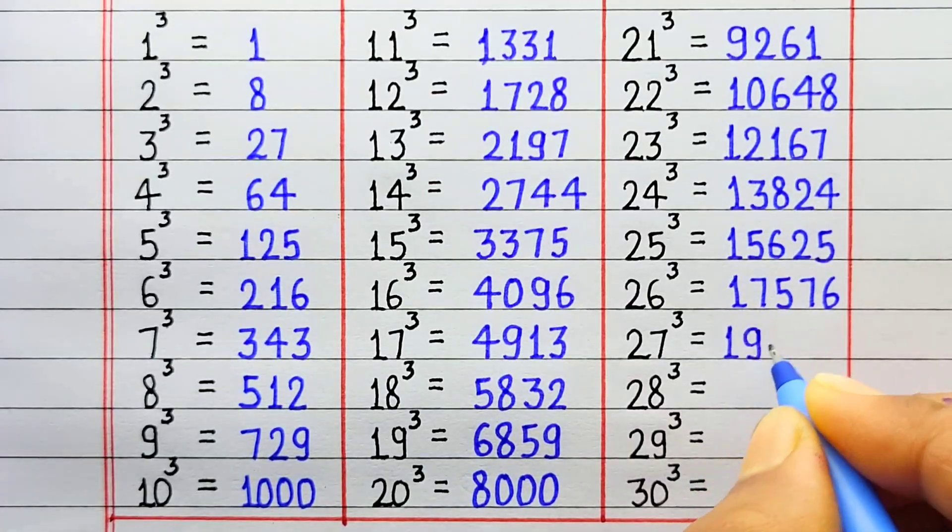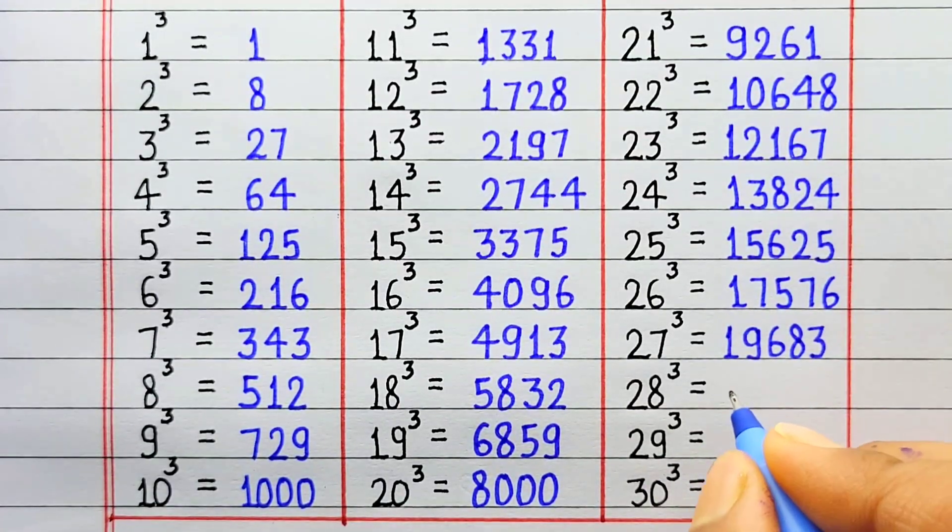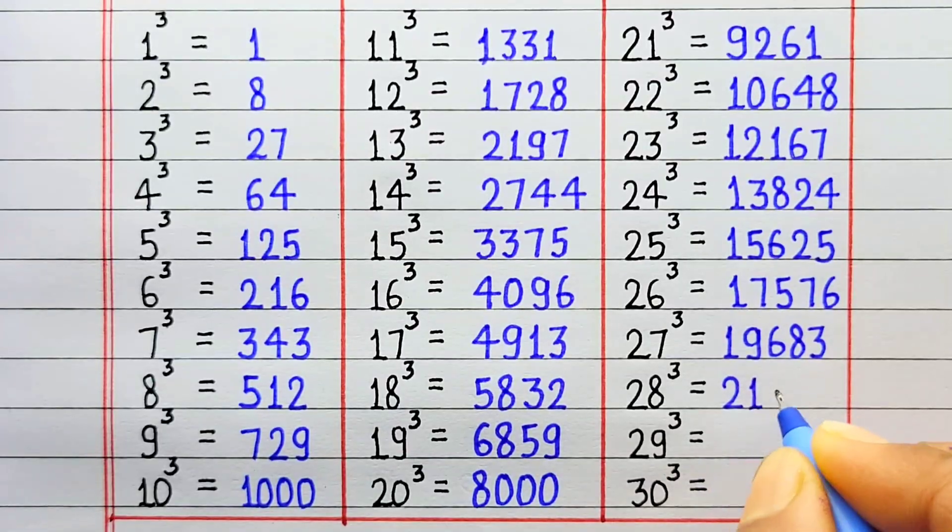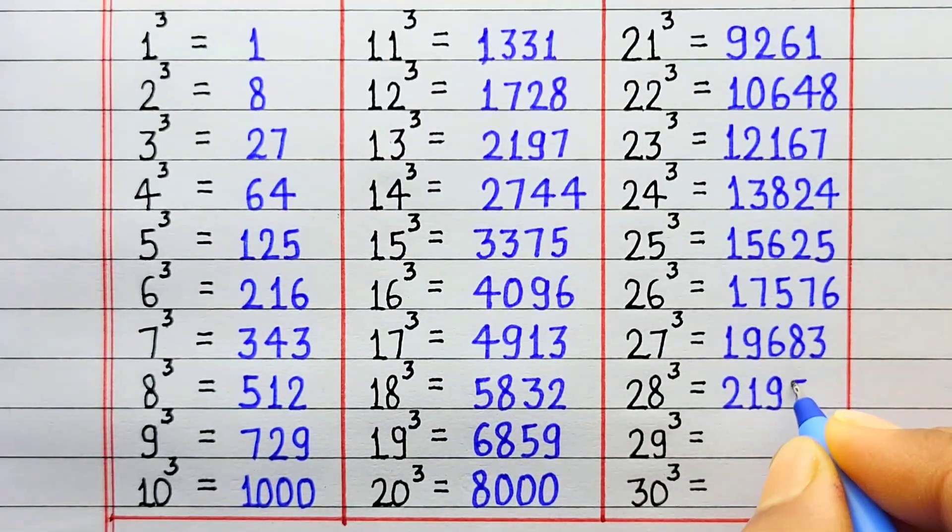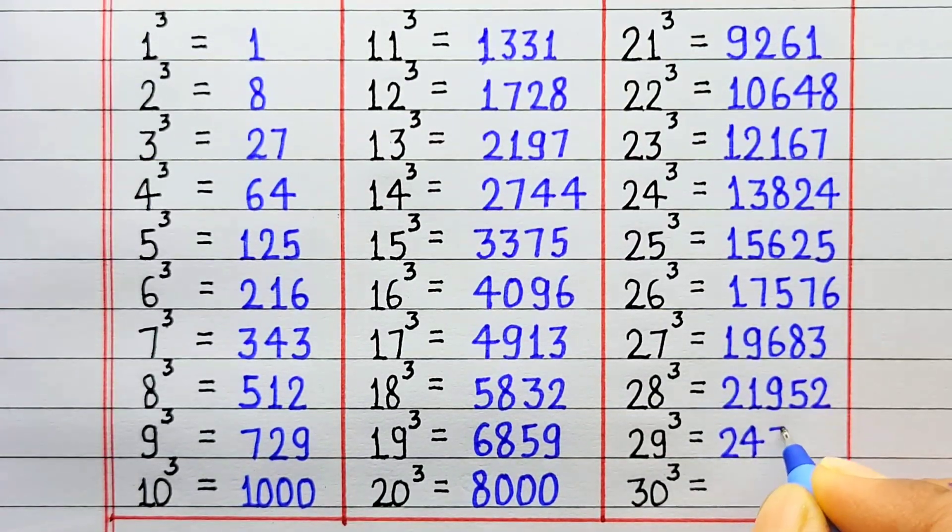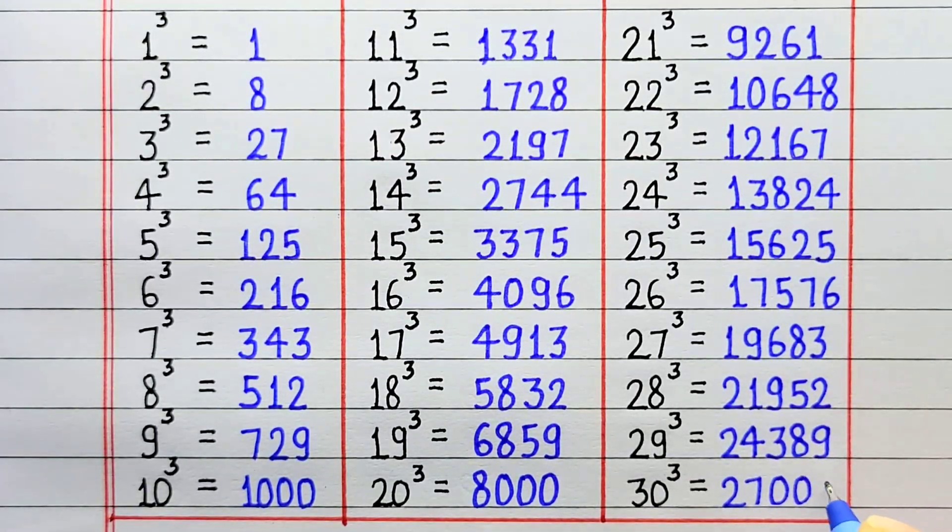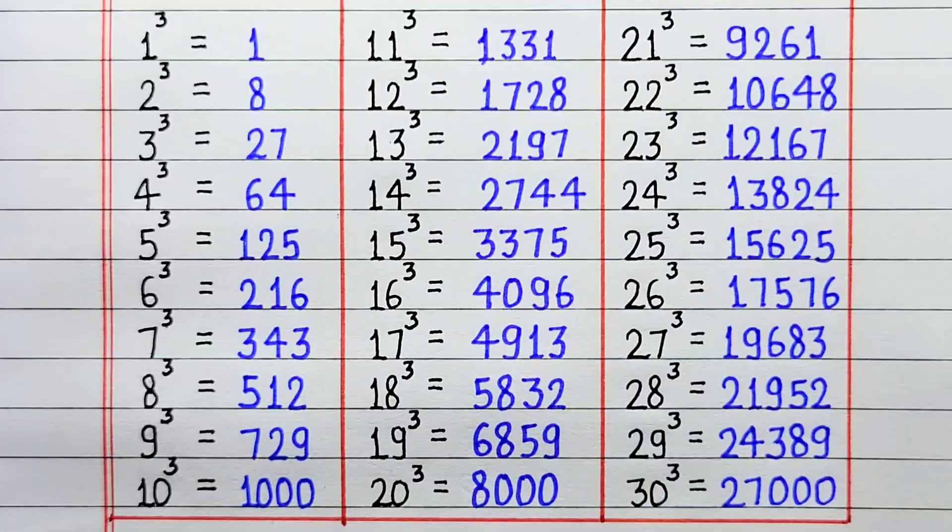Cube of 27 is 19683. Cube of 28 is 21952. Cube of 29 is 24389. Cube of 30 is 27000. Friends, like this video and please subscribe to my channel. Thanks for watching this video.